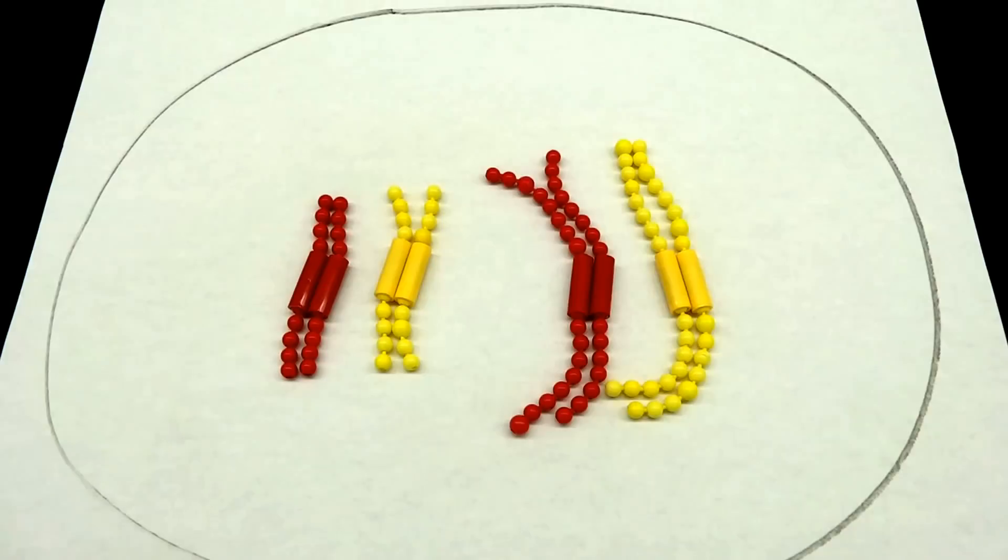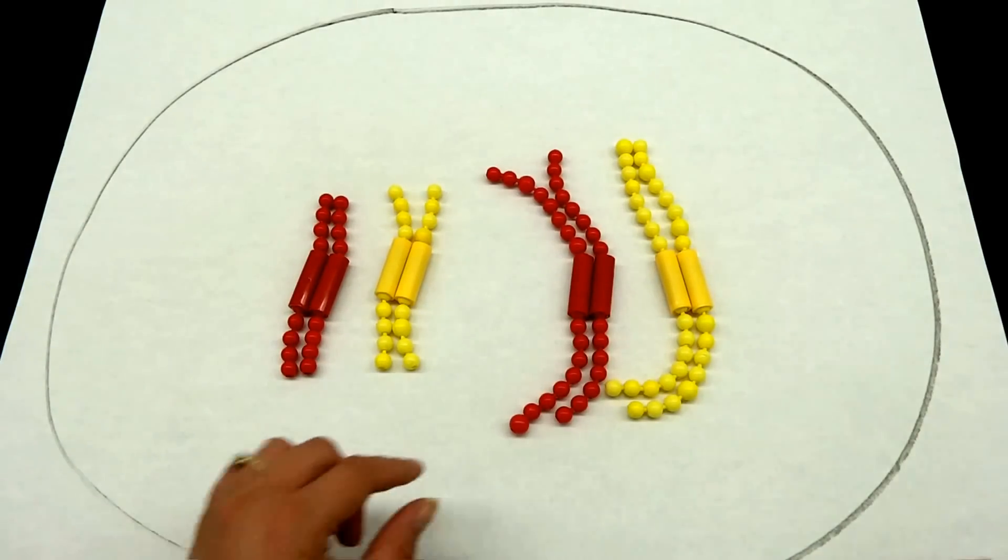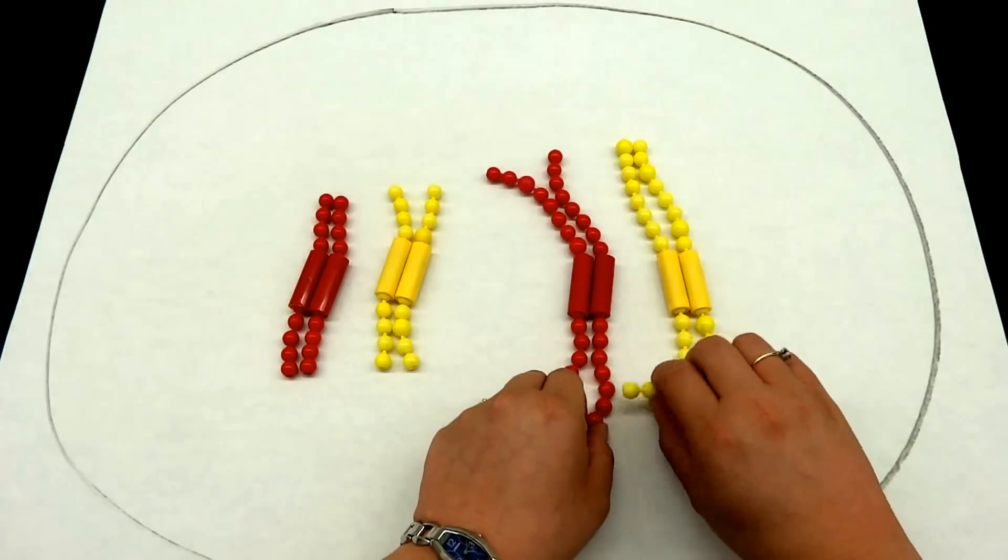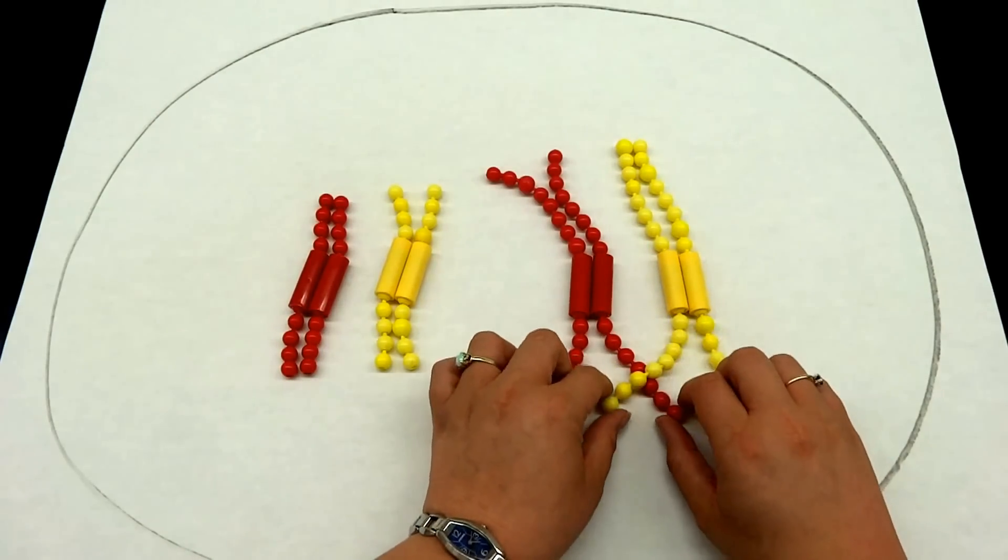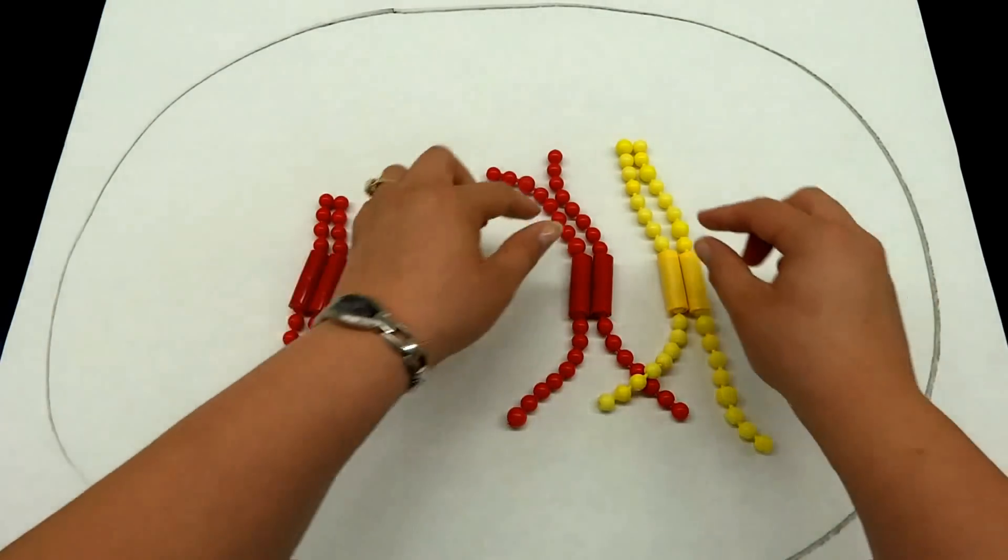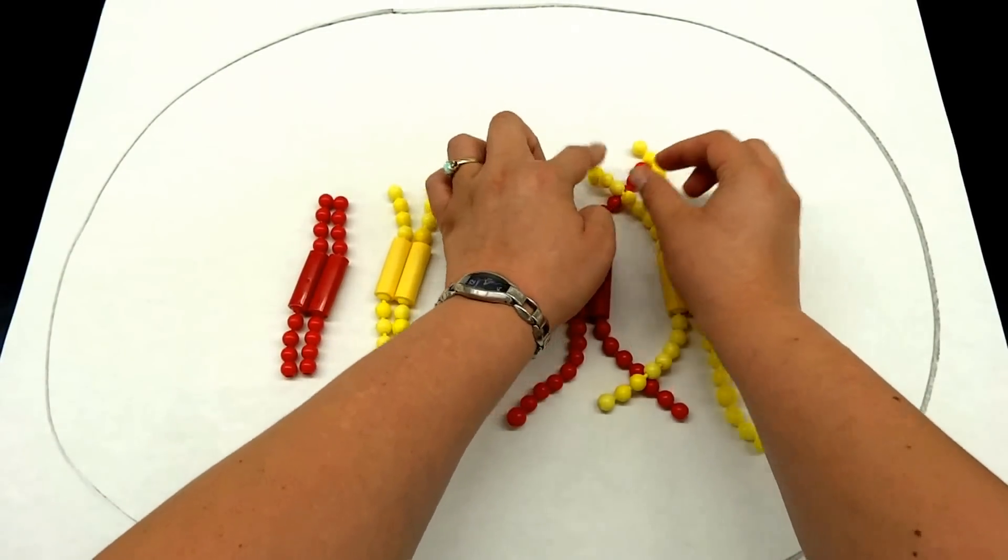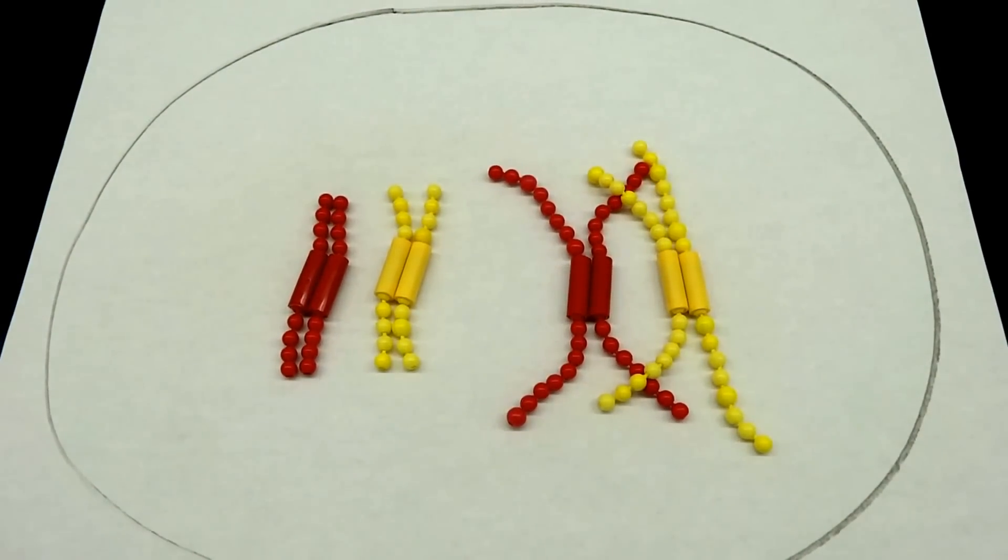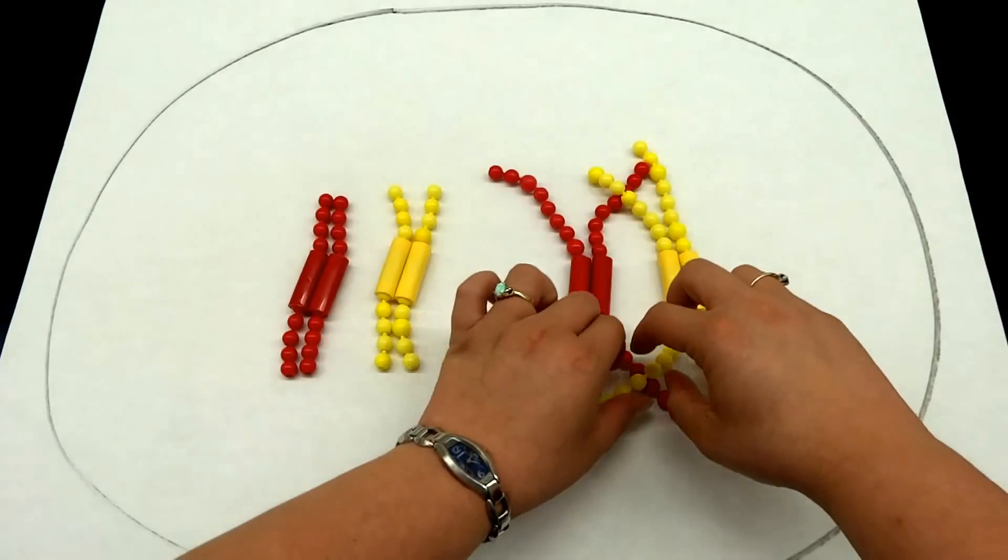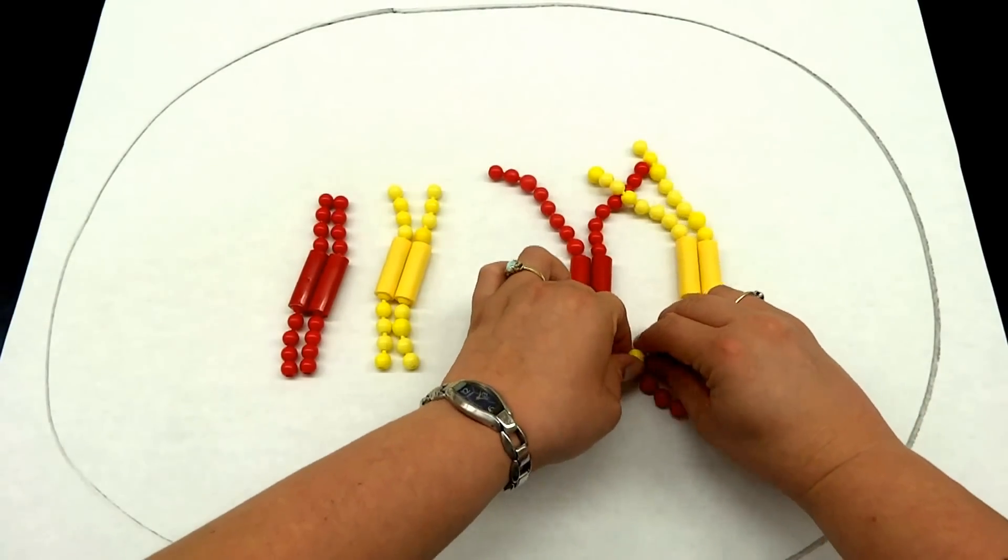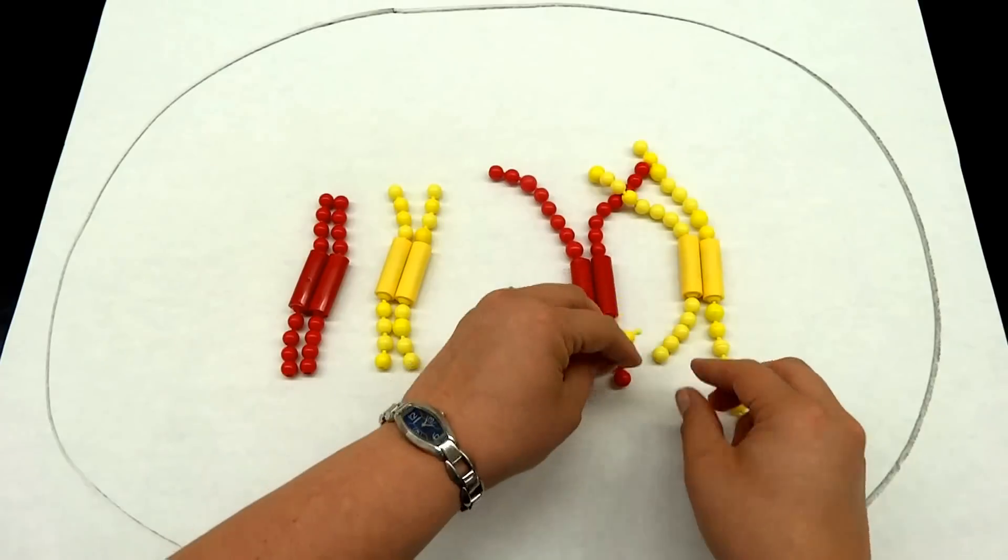What will happen is the chromosome from mom and dad are going to cross over one another. They may do it in a couple of places and they're actually going to exchange their DNA. So if we pull off three of the yellow, it will exchange with three of our red.